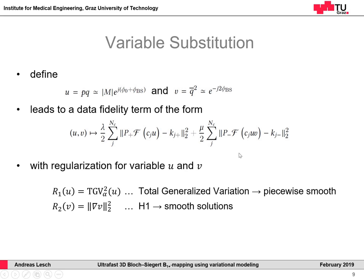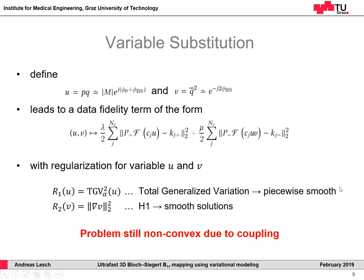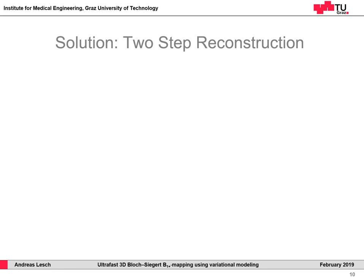Coming back to the data fidelity term, you can see that the variable V only appears in the second data fidelity term, but it is still coupled in the variable U, making the problem still non-convex. However, due to this reformulation, it is quite easy to decouple the problem in the variables U and V. This leads to our final reconstruction solution, the so-called two-step reconstruction.